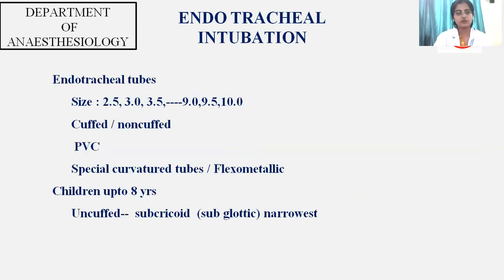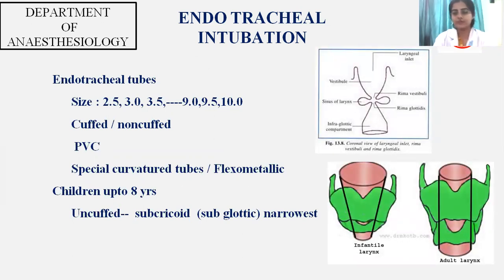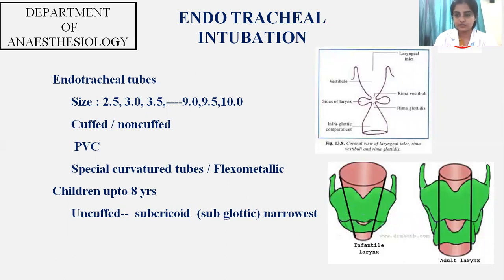Endotracheal tubes come in different sizes starting from 2.5 mm internal diameter up to 10 mm. There are cuffed and uncuffed endotracheal tubes, PVC tubes, preformed tubes, and flexometallic tubes. In children up to eight years of age, we prefer uncuffed tubes because in children the subglottic cricoid portion is the narrowest portion. The infantile larynx is cone-shaped whereas the adult larynx is cylindrical in shape, which is why in adults the glottic area near the vocal cords is the narrowest portion.